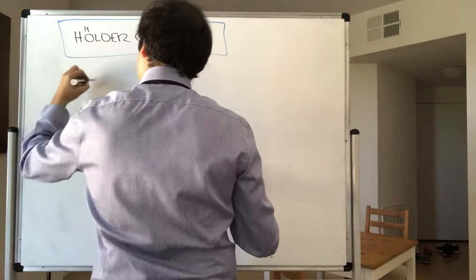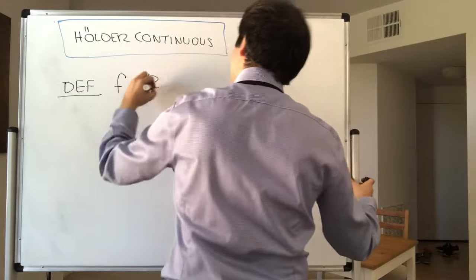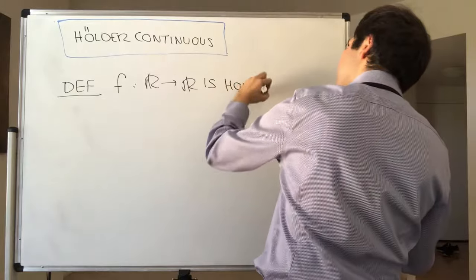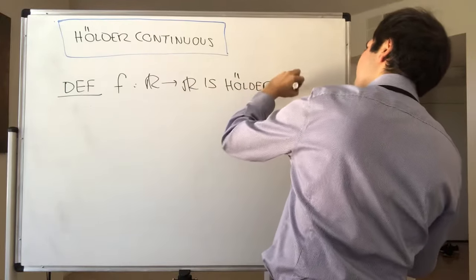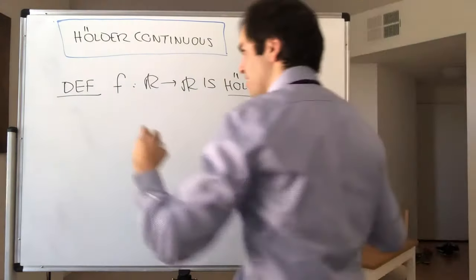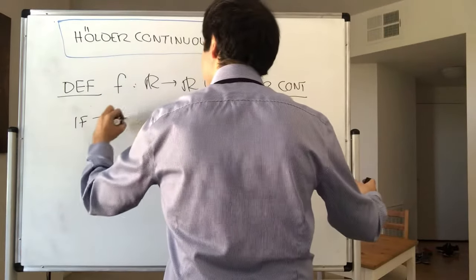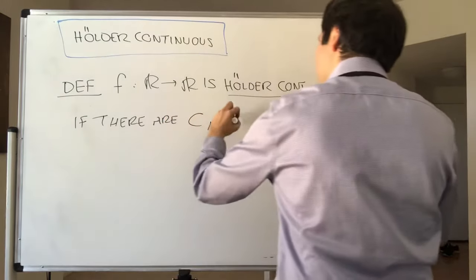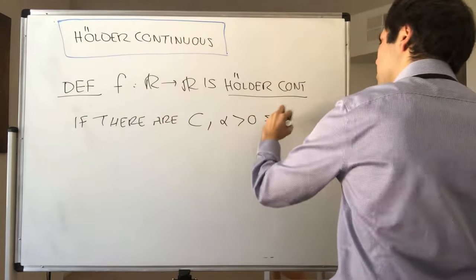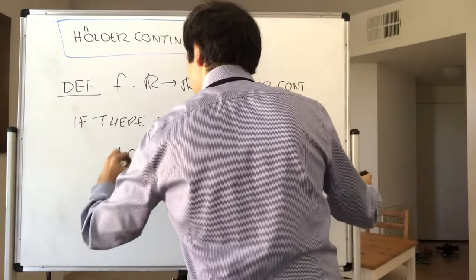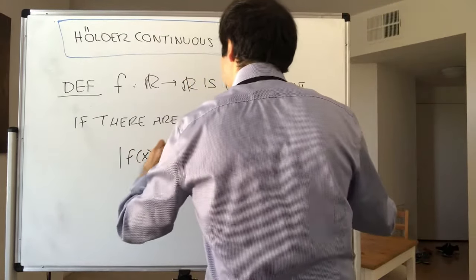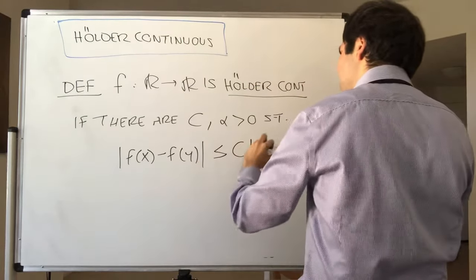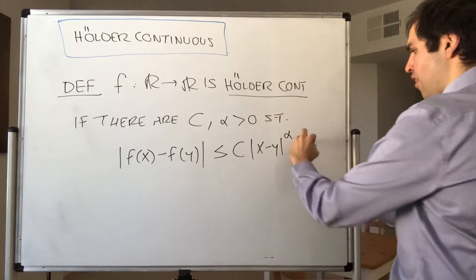Definition: F from R to R is Hölder continuous if there are constants C and α positive such that the absolute value of F(x) minus F(y) is at most C times |x minus y| to the α, for all x and y.